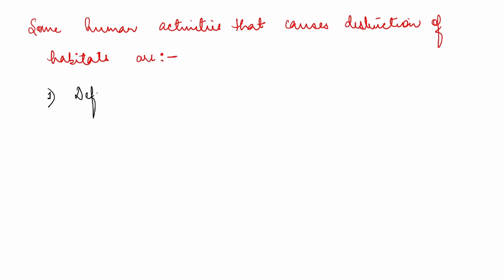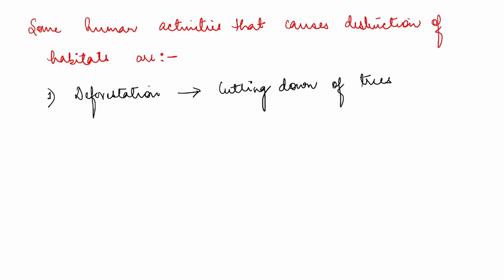What is deforestation? Deforestation is basically cutting down of trees. Deforestation deprives the wildlife of its cover and food, because it reduces the area available for their free movement.